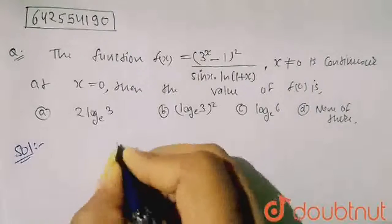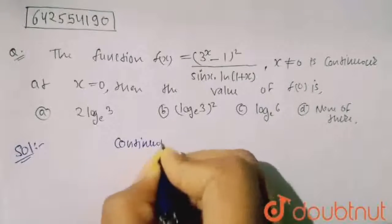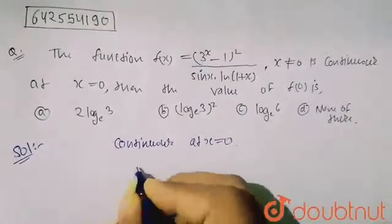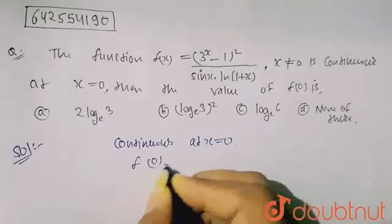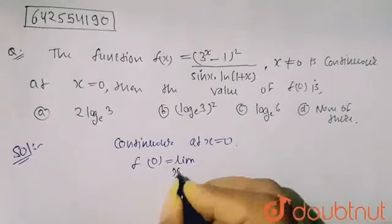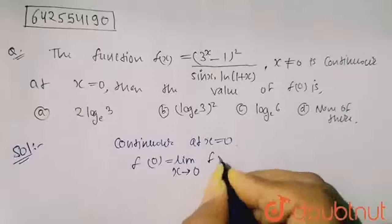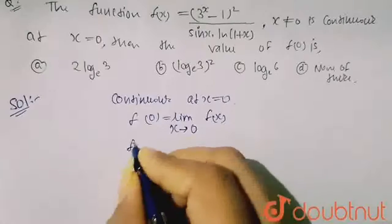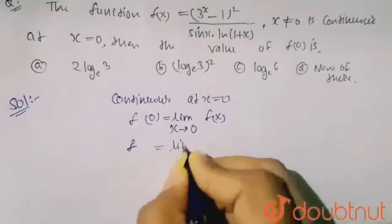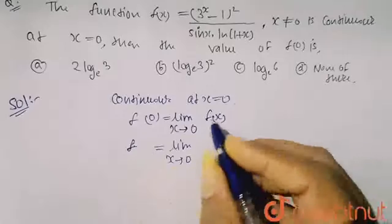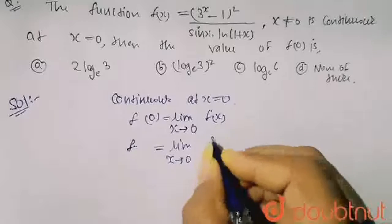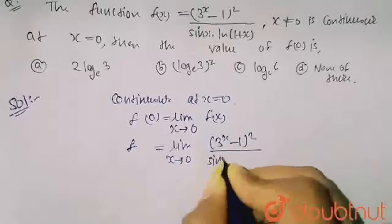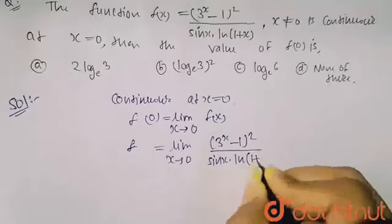Since it is given that f(x) is continuous at x equals to 0, my f(0) is equals to limit x tends to 0 of f(x). So f(0) equals limit x tends to 0 of (3^x - 1)² upon sin x · ln(1 + x).